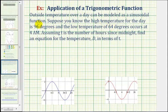First, because the high temperature is 96 degrees and the low temperature is 64 degrees, if we find the average of these two, we should be able to find the midline of our sinusoidal function. So 96 plus 64 divided by 2, which is equal to 160 divided by 2, which is equal to 80, which means a horizontal line Y equals 80 is the midline of our sinusoidal function.